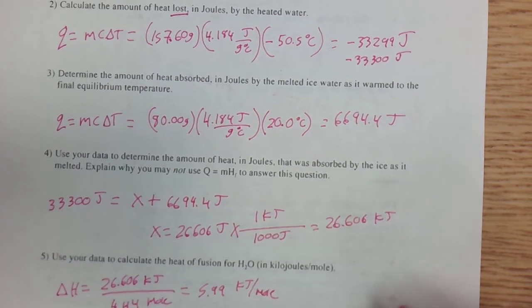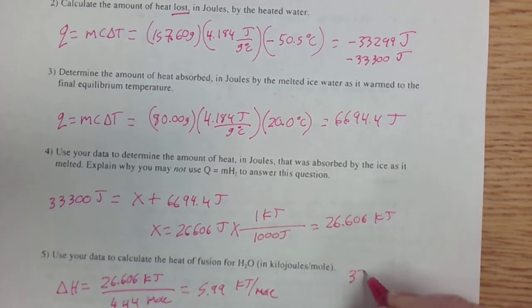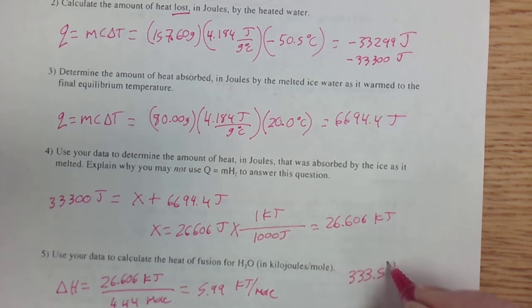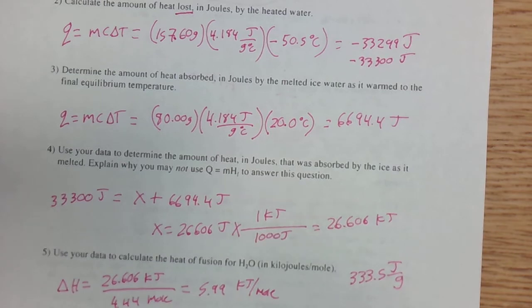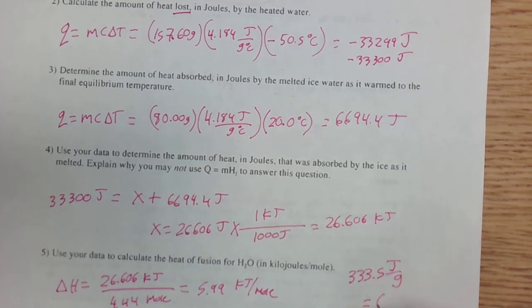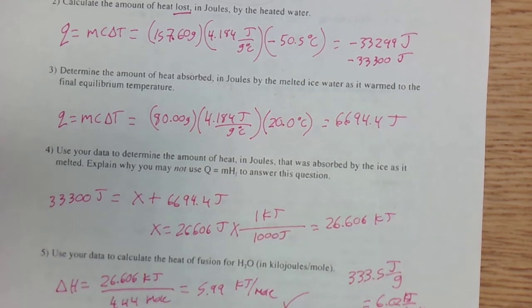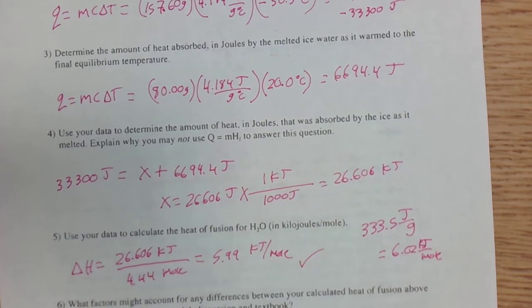Now, I realize that when we've been doing this in class, we've been using the number 333.5 joules per gram. But if you convert that to kilojoules per mole, it comes out to equal 6.02 kilojoules per mole. So this number is really close. That's where we want it to be.